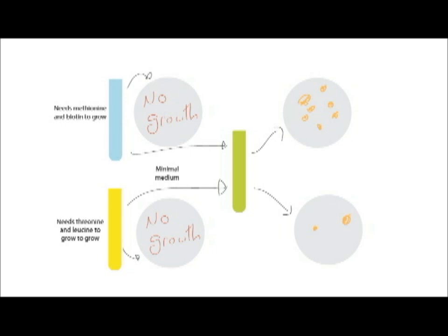They're grown together in a medium containing leucine, threonine, methionine, and biotin. When placed on a medium with all these supplements, they grow, showing the original strains grow as expected when they have what they need.